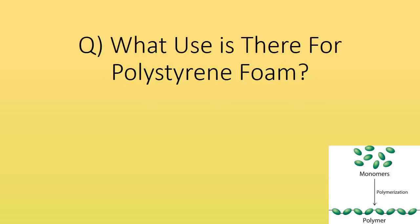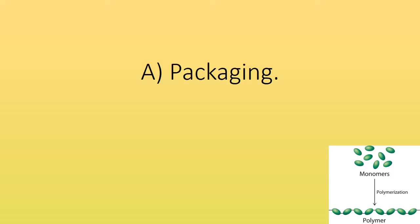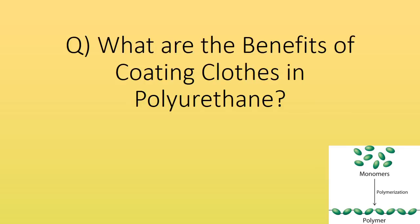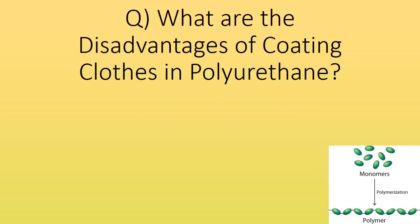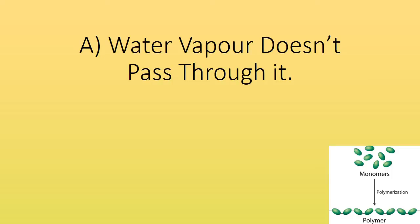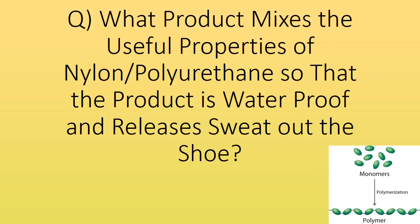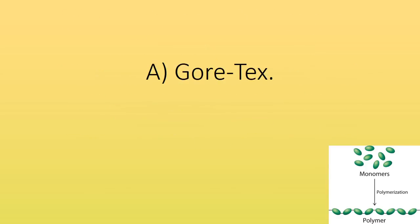What use is there for polystyrene foam? Packaging. What are the benefits of coating clothes in polyethene? Tough, hard wearing and waterproof. What are the disadvantages of coating clothes in polyethene? Water vapour doesn't pass through it. What product mixes the useful properties of nylon and polyethene so that the product is waterproof and releases sweat? GORE-TEX.